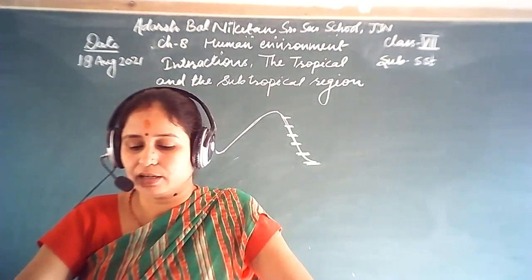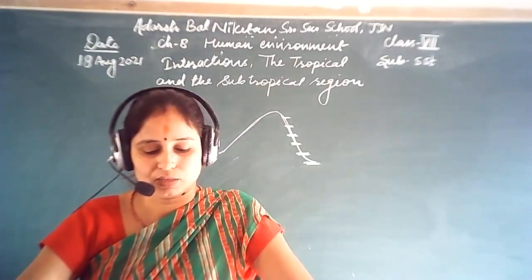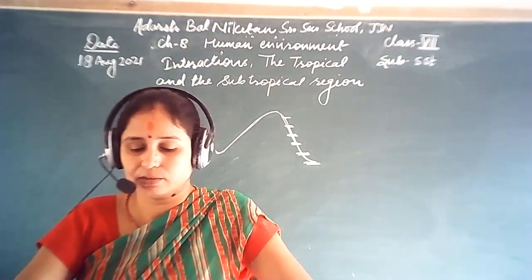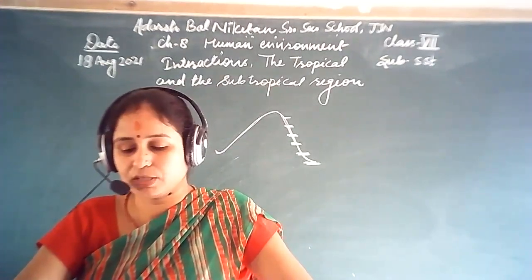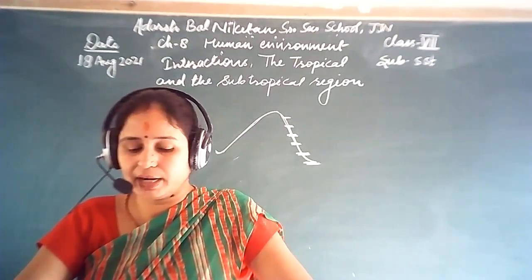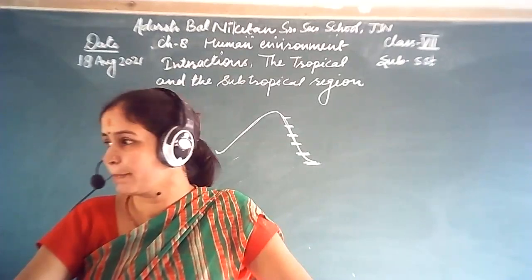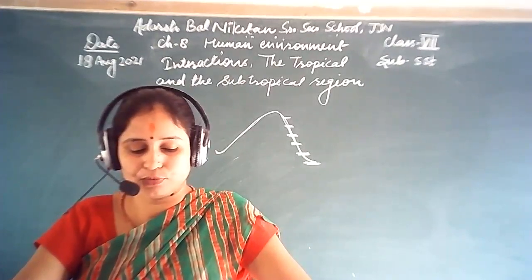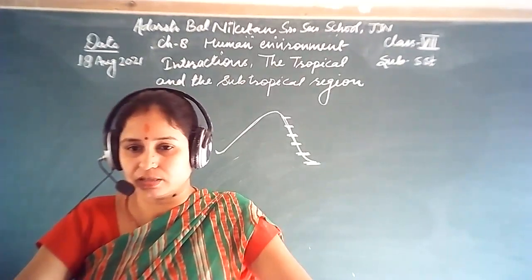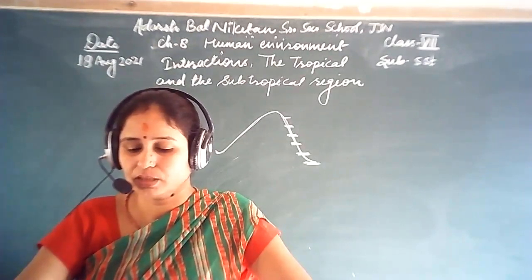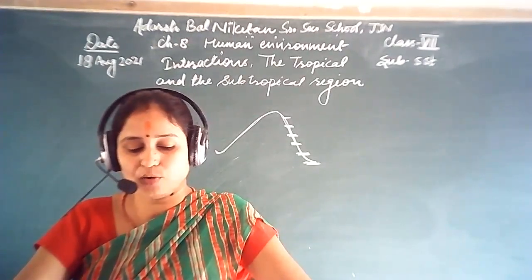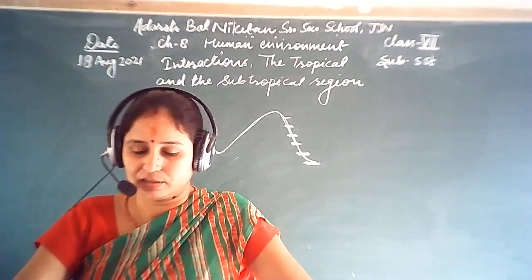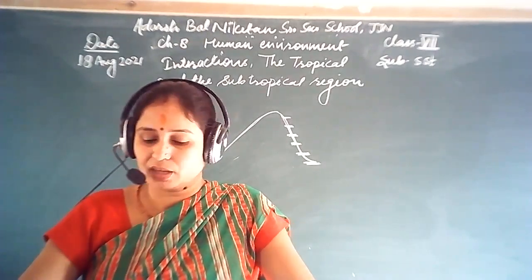Tick the correct answers: Toucans are a type of — birds. Manioc is the staple food of — the Amazon people. Kolkata is located on the river — Hugli. Deodars and firs are a type of — coniferous trees. Bengal tiger is found in — the delta area.